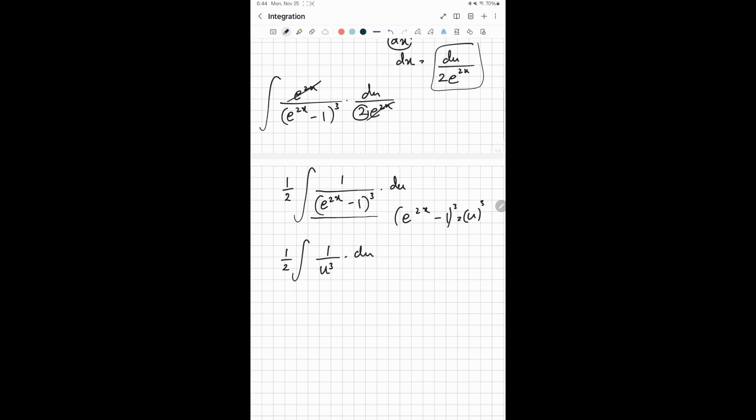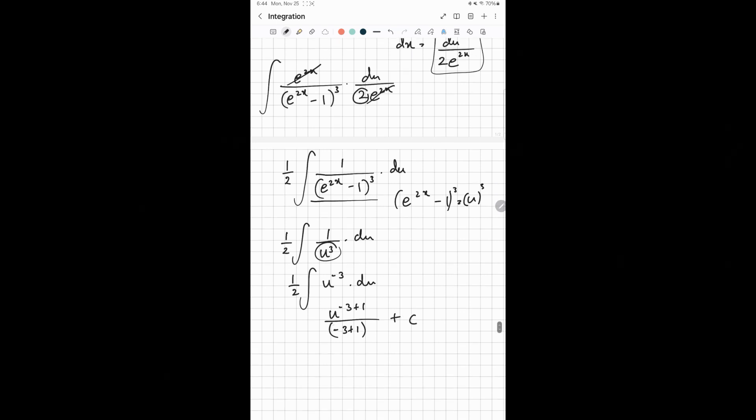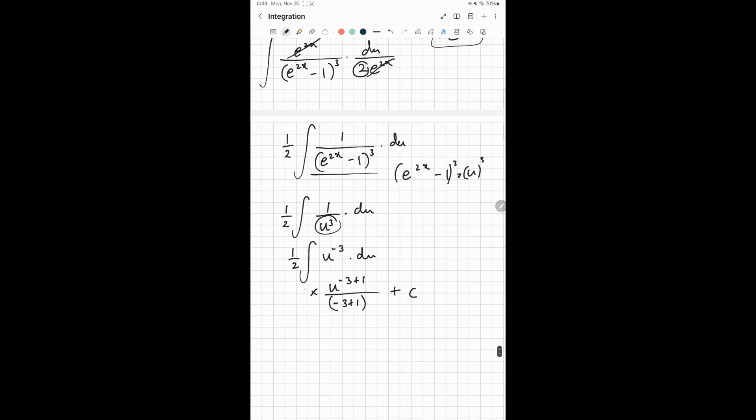Now this integration is really easy. All you have to do is integrate u^(-3), since I just took this to the top. So how do you integrate this? It's u^(-3+1) over (-3+1), plus c. Always put the c, never forget that. So you get half times u^(-2) over -2 plus c, which is -1/4 u^(-2) plus c.